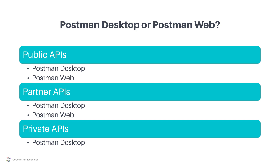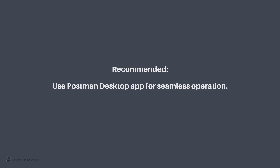Whereas when it comes to the Postman web app, it is always best to use it when the API is freely available or accessible through the public internet. If it is going to be available only on the local network, then you may face some challenges accessing your services. Having known these points, I strongly recommend using the desktop app for seamless operations. Personally, I always use the desktop app because it gives the full capabilities of Postman without any limitations or restrictions.